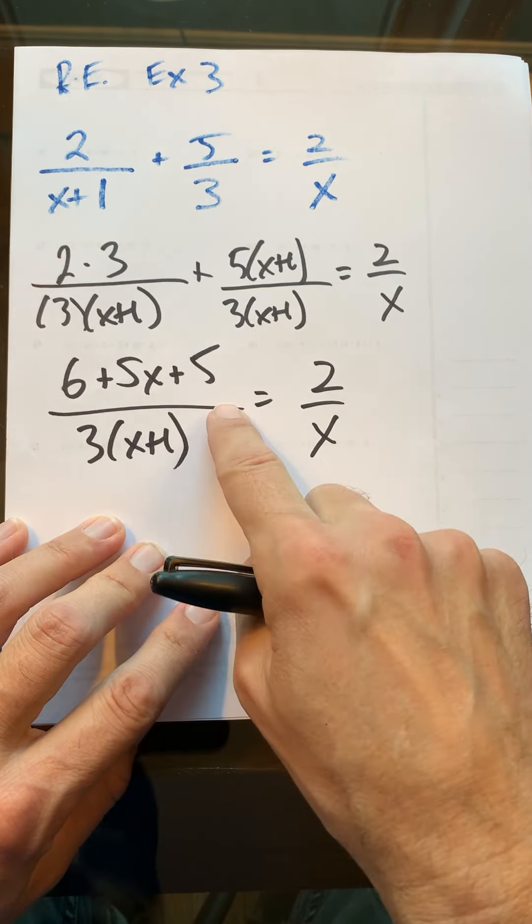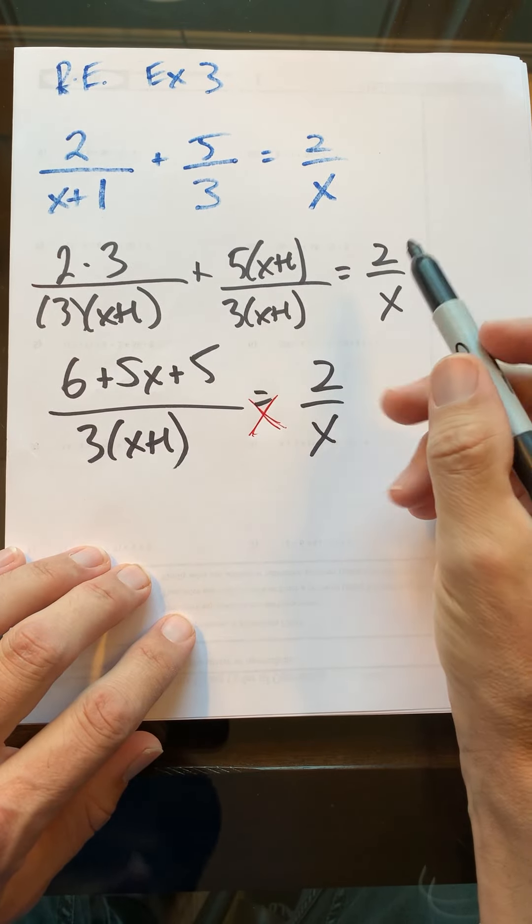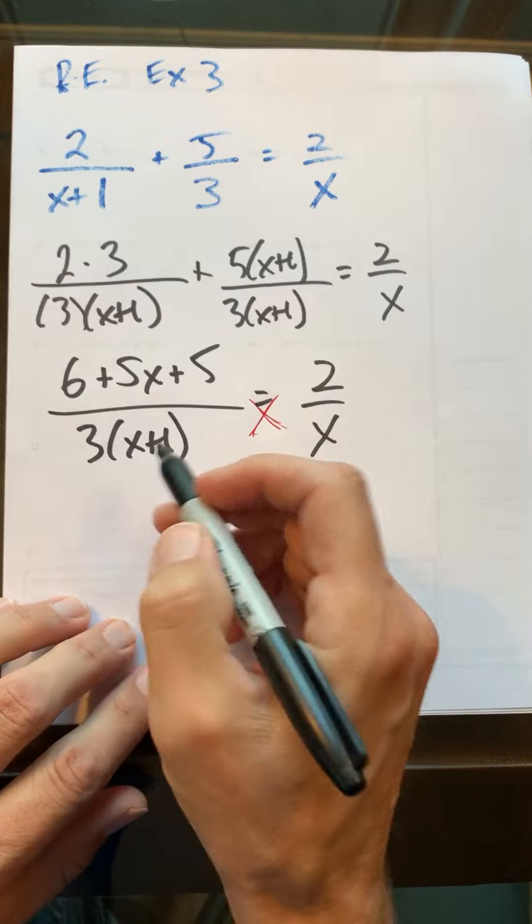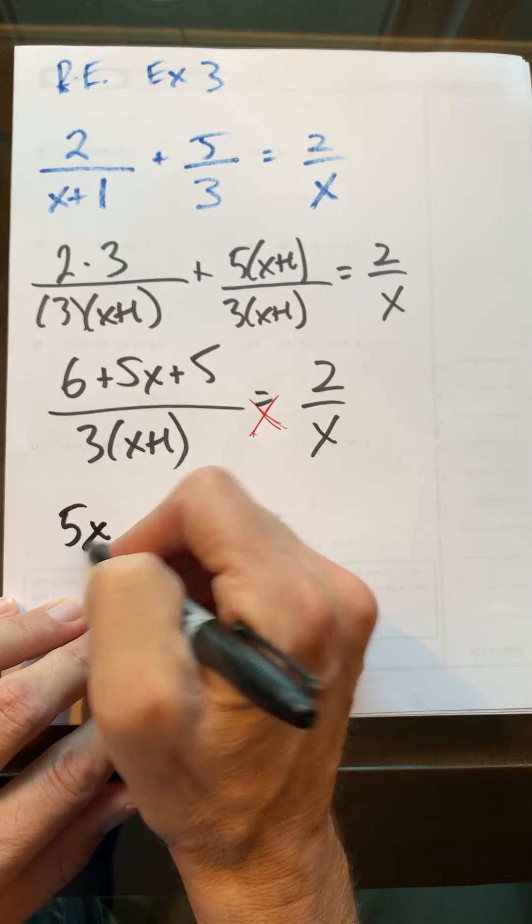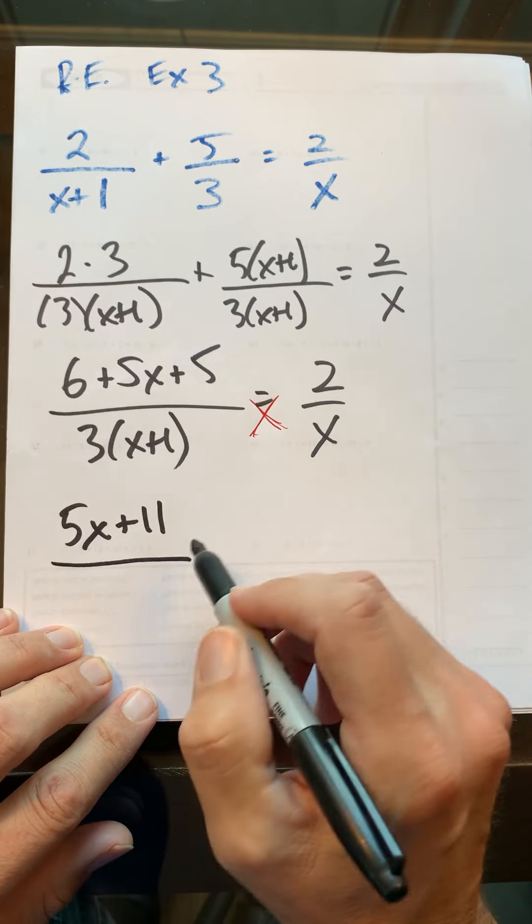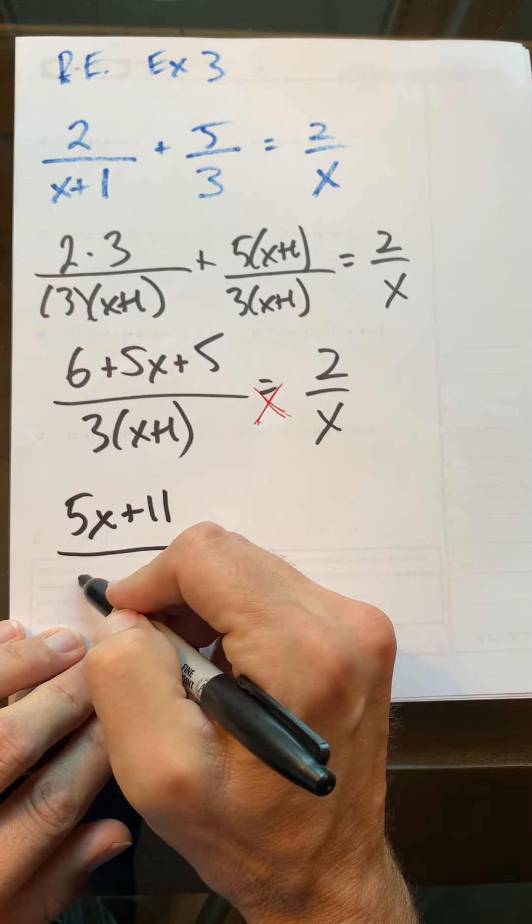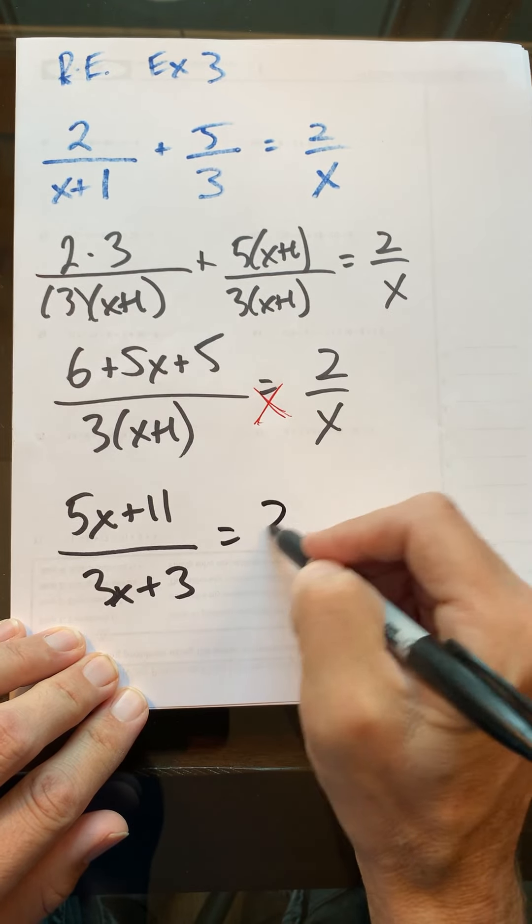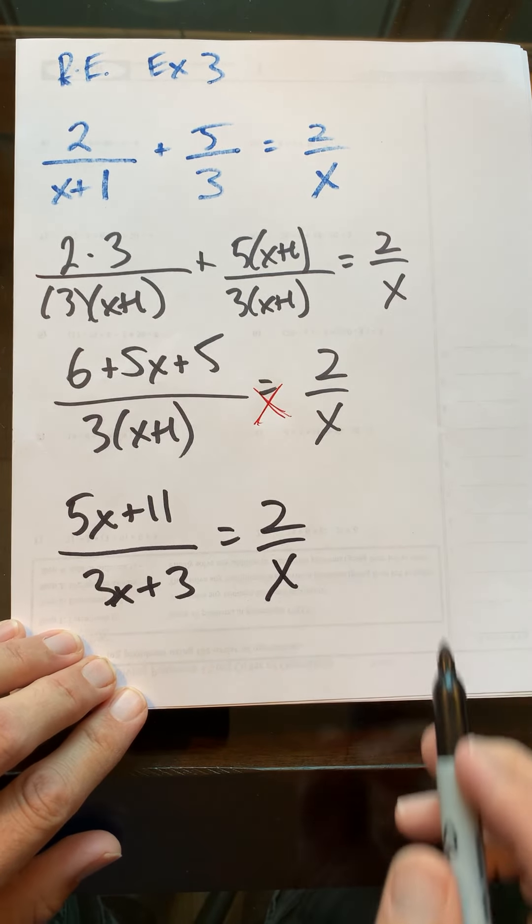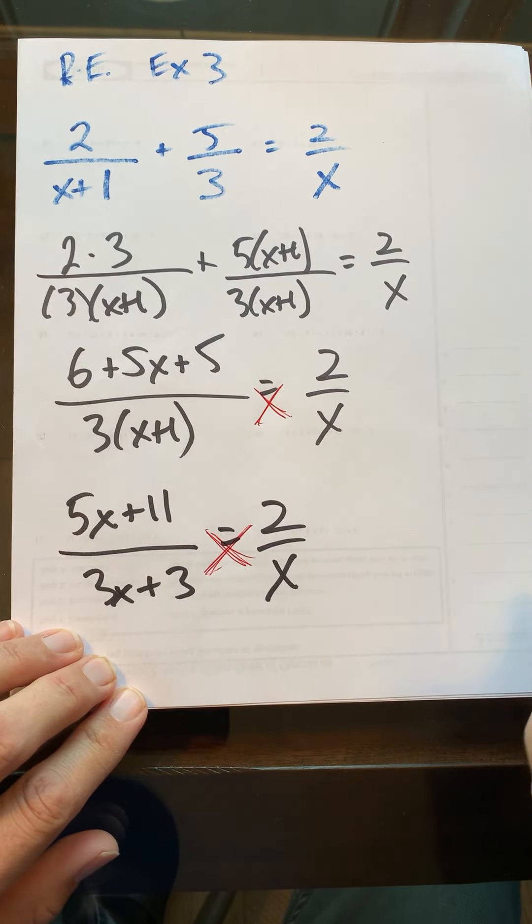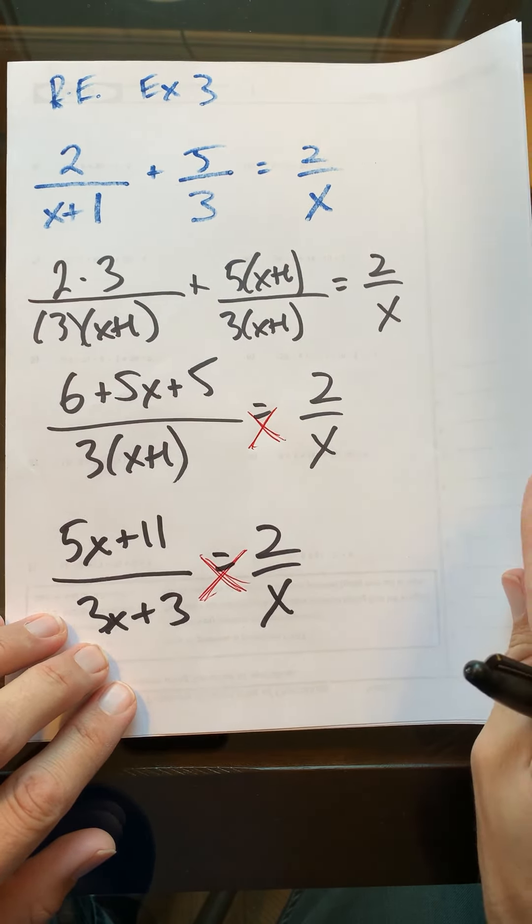Now I can do that cross multiply step. Let me put these together first: 6 + 5, so 5x + 11 over—I can leave this but I'll expand it out, it might be easier to see—3x + 3 equals 2/x. Now I'll do my cross multiplying step.